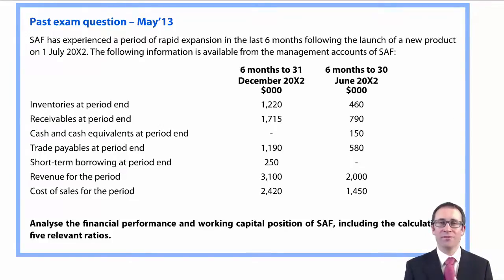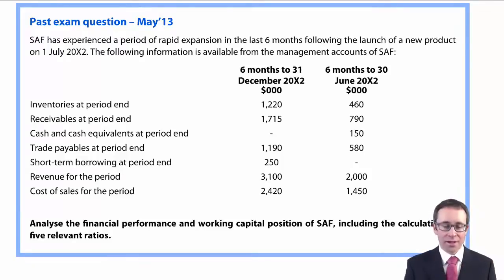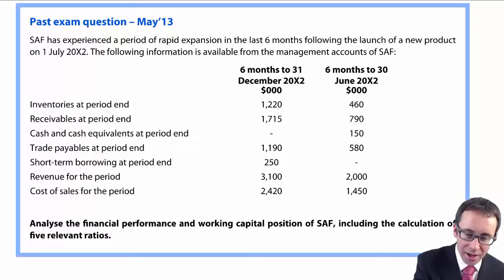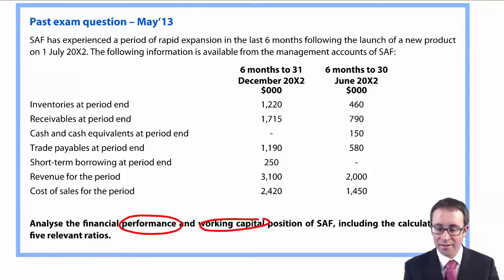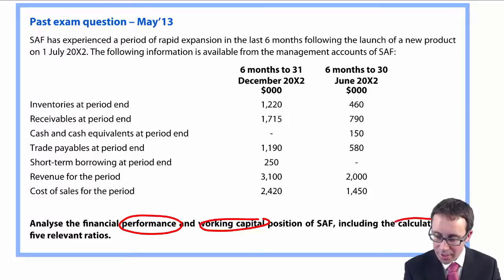I really like this question. It was a question for 10 marks. It was an old question, and what it wanted you to do was to analyse the performance and working capital position of SAS or SAF, including the calculation of five relevant ratios.